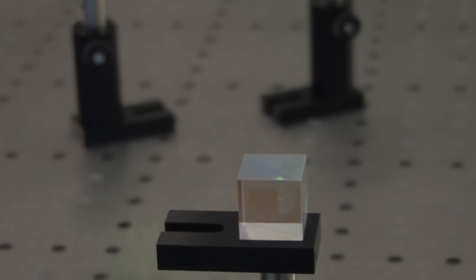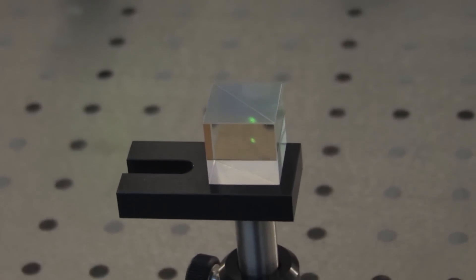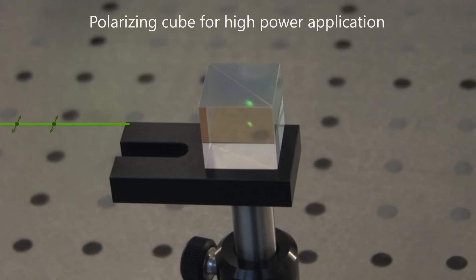S-polarized components' polarization plane is perpendicular to plane of incidence, and S-polarized light is reflected at 90 degrees angle.